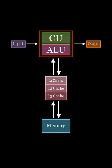The primary function of cache is to act as a buffer between the CPU and the main memory. It stores frequently accessed data and instructions so that the CPU can quickly retrieve them without having to access the slower main memory every time.